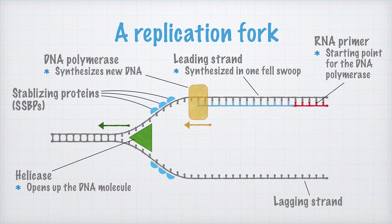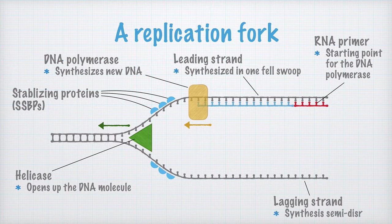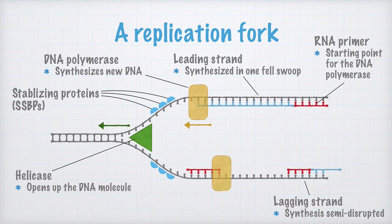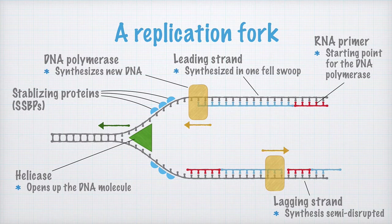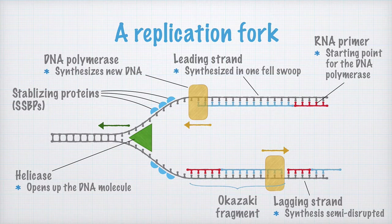On the lagging strand, the DNA synthesis is semi-disrupted, which is because it has to be synthesized in the opposite direction. New primers are continuously laid down, and the DNA polymerase keeps synthesizing DNA backward. This results in several Okazaki fragments on the lagging strand.